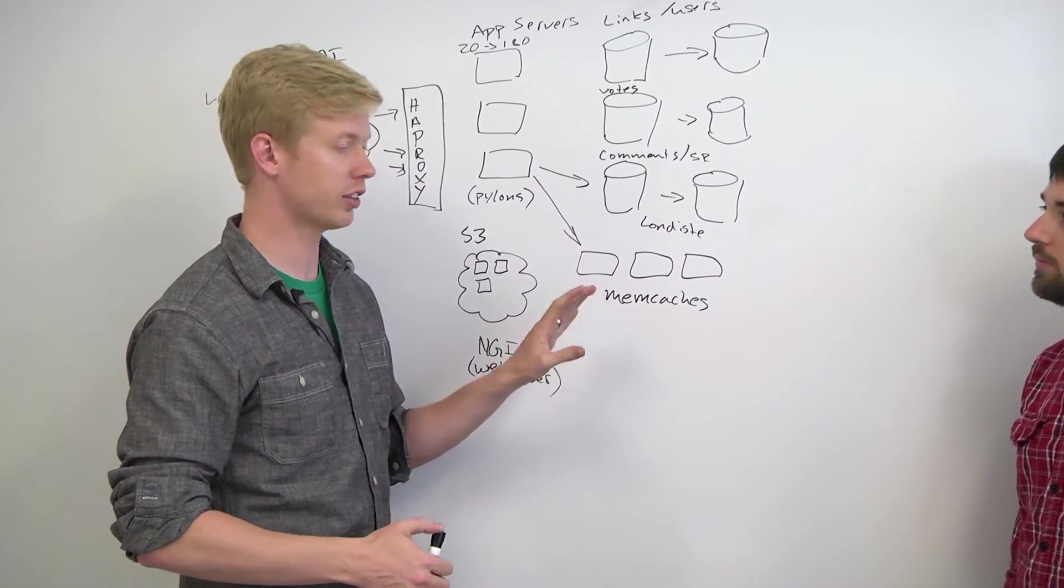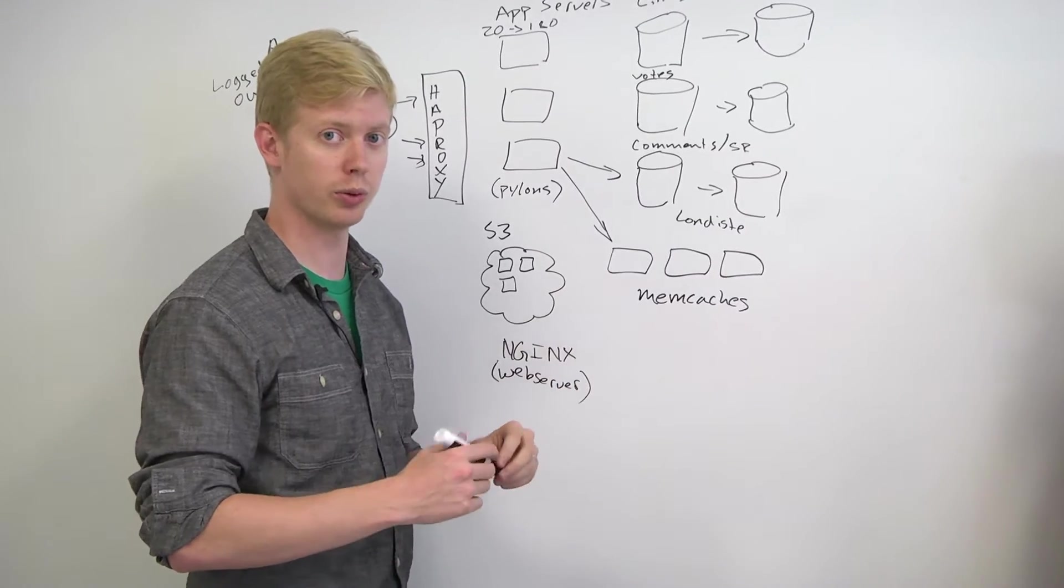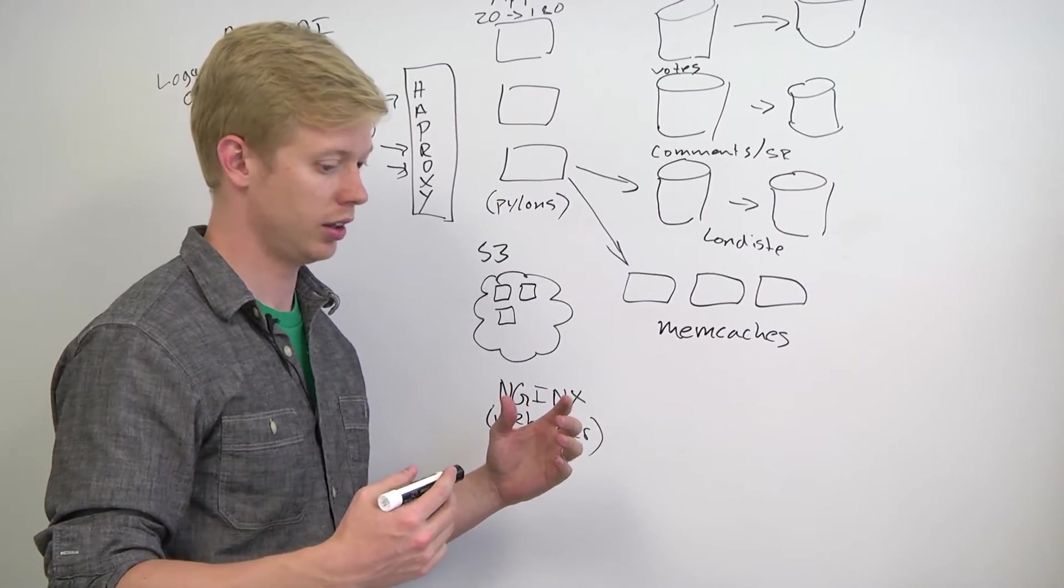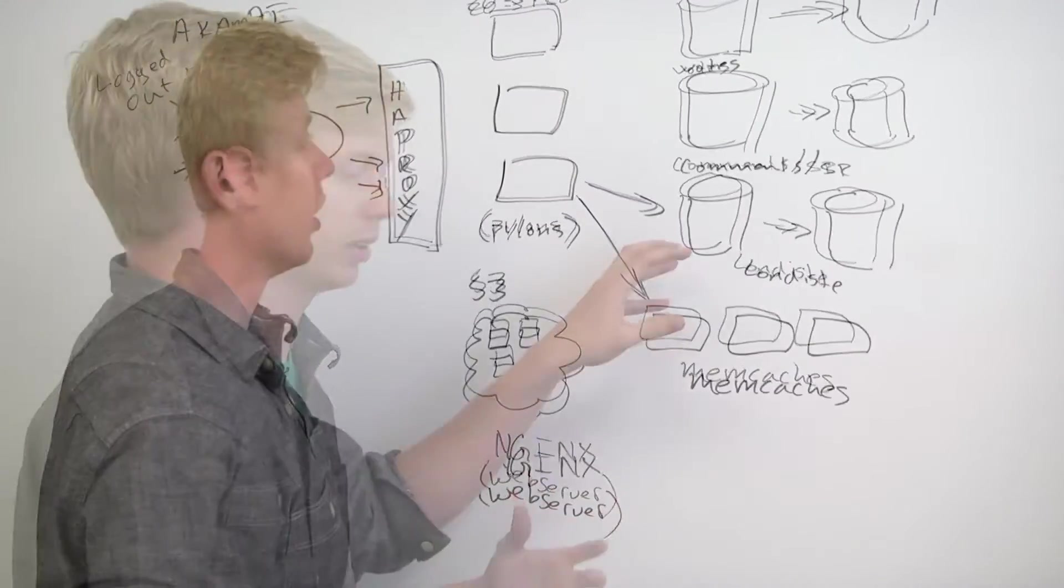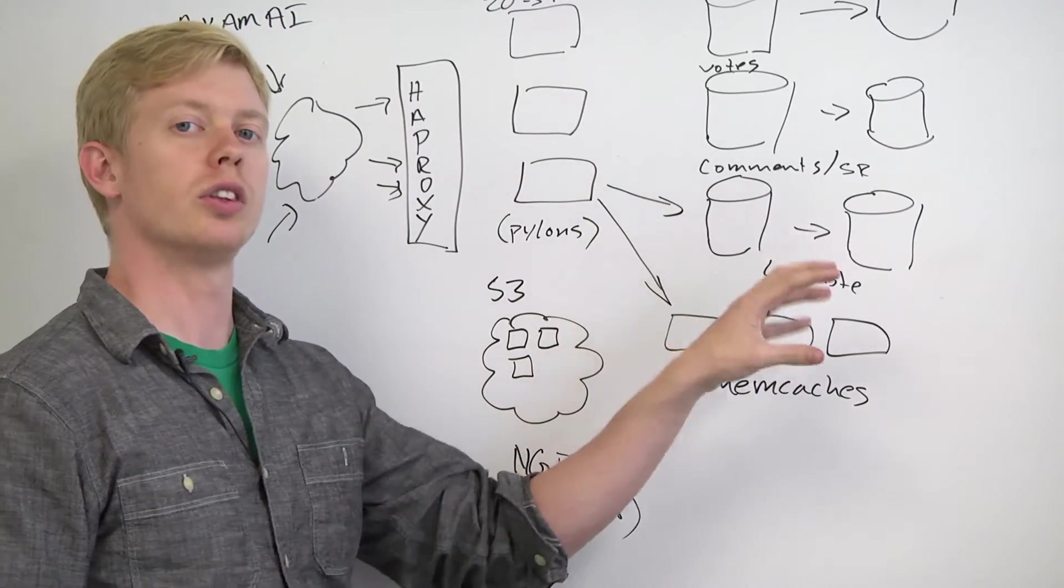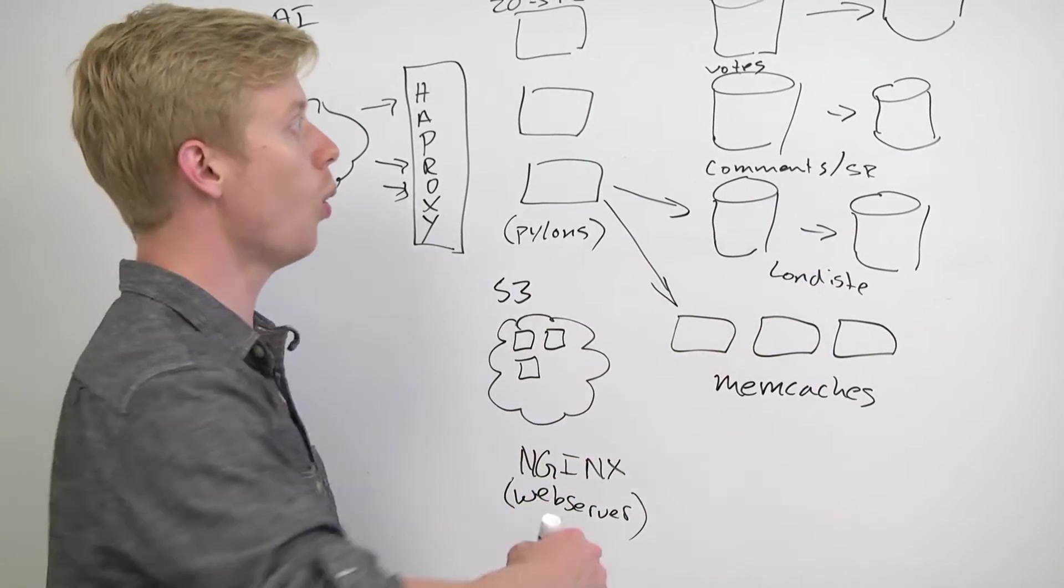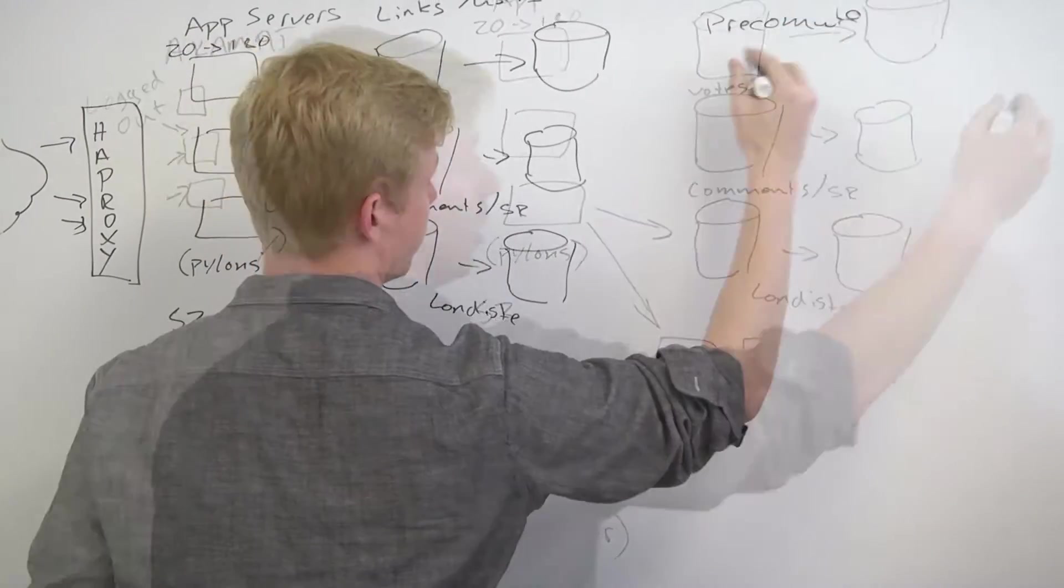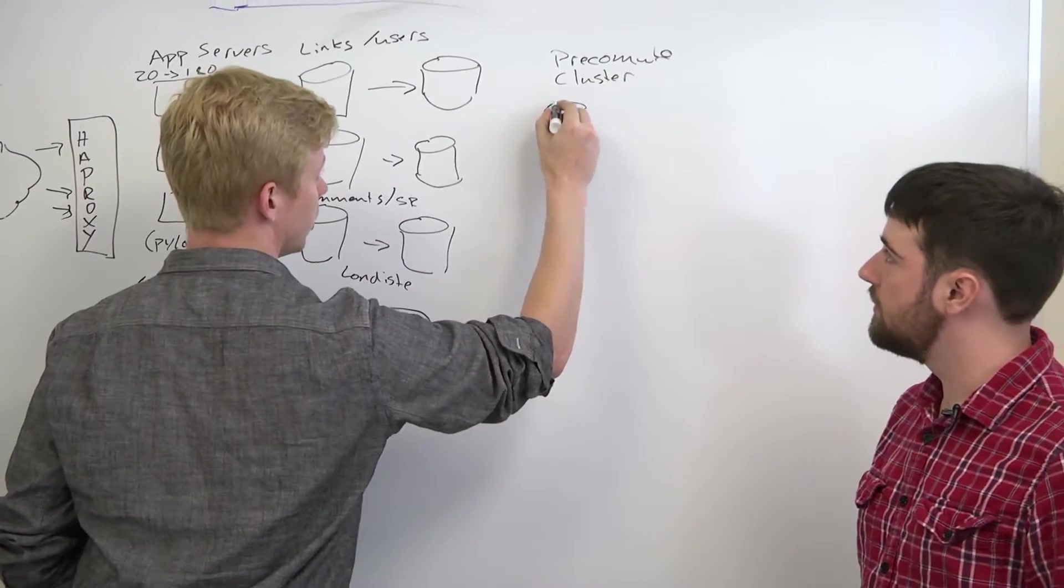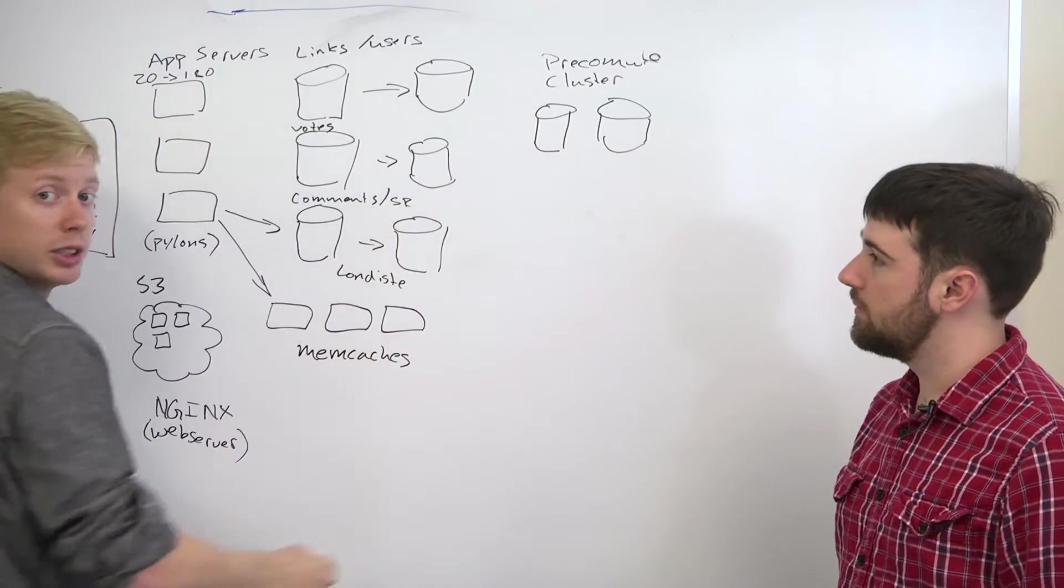The other big system we had, and I think this is kind of the final big system, is we had what was called the pre-compute system. Doing real-time queries against the database was too slow to generate our listing pages. So we had a whole separate database cluster called the pre-compute cluster, which if I recall was just mirrored versions of all of these machines.